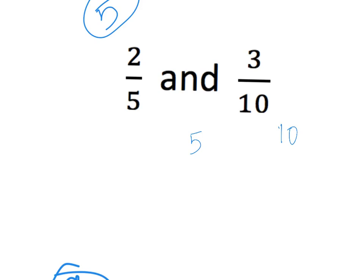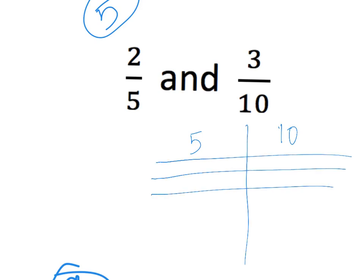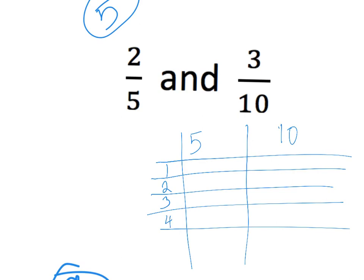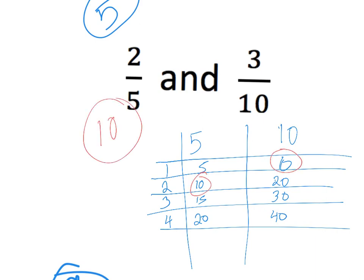Five and ten — this one should be pretty easy to just look at and see. We'll write it out anyway so that we're all on the same page. Five, ten, fifteen, twenty. One times ten is ten, twenty. I can see right here that we have ten in each column, so ten would be the least common denominator.